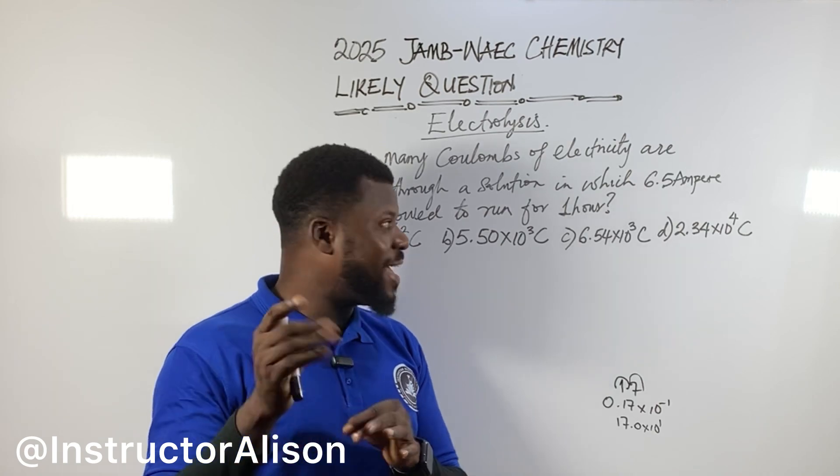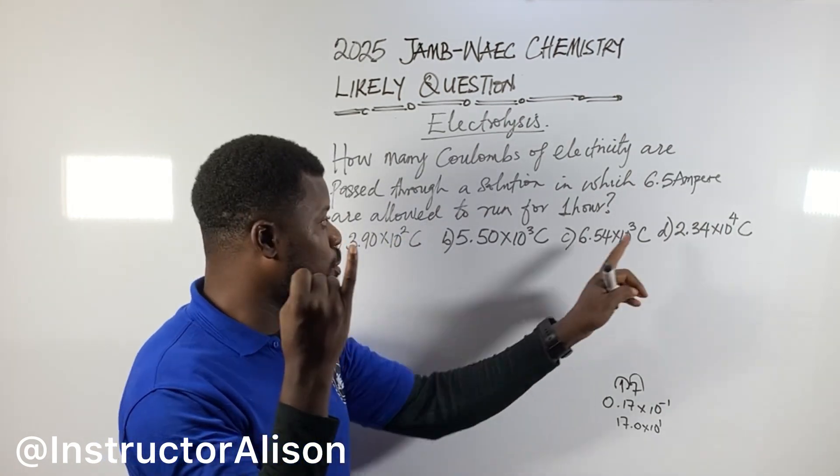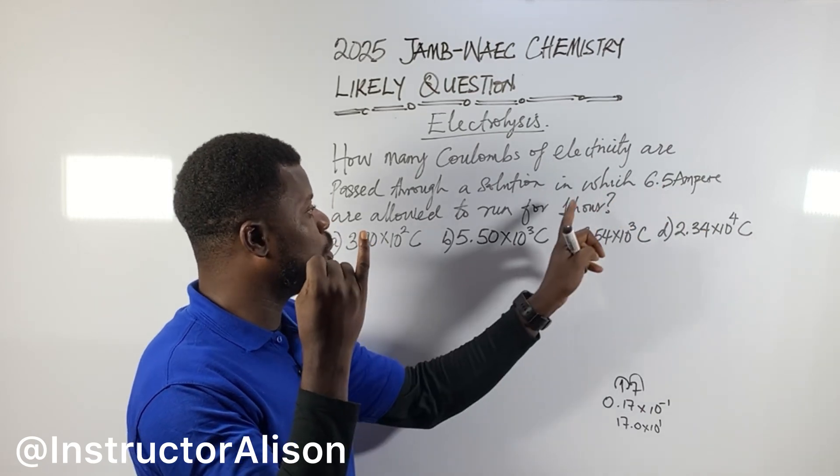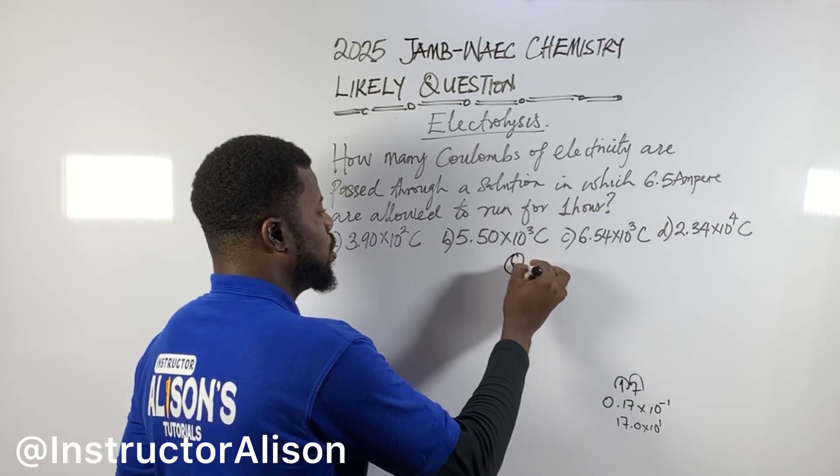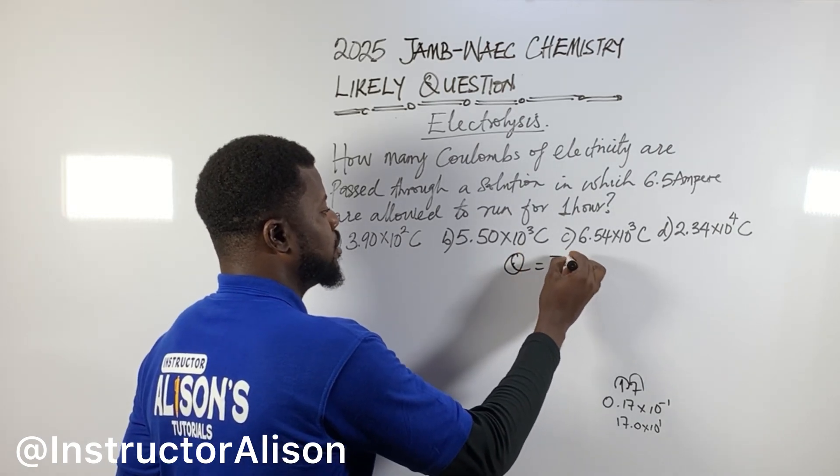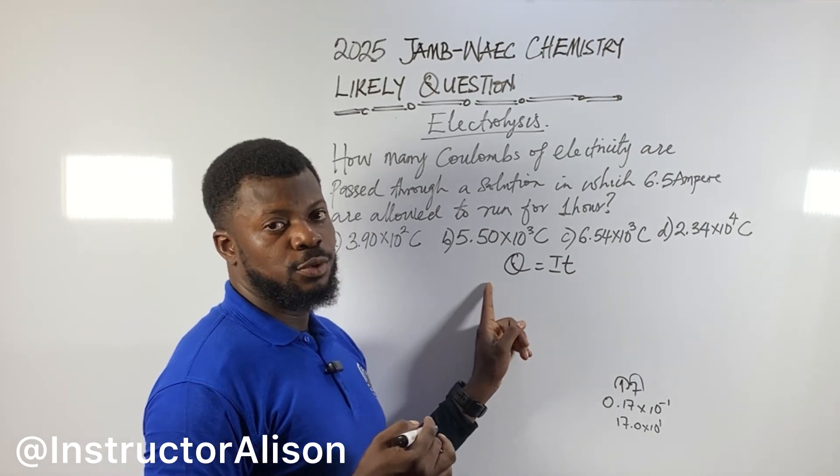This is the time and the current, and you're going to submit to find the charge, because they need the charge in coulombs. So what are we going to do now? The formula that connects current, time, and charge is Q equal to I times T.